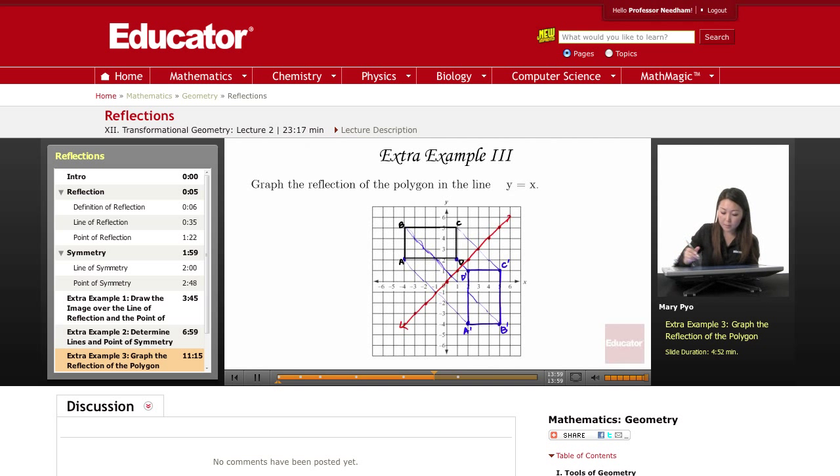Okay, now to find the coordinates of my pre-image, this one in black. A is negative four, two. B is negative four, five. C is one, five. And D is one, two.